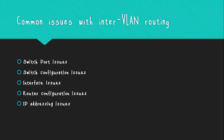Finally, there are IP addressing issues that happen when the wrong subnet mask is used, or when the IP address assigned to a certain subinterface or interface is not within the range of the VLAN created.